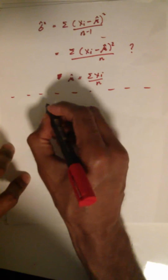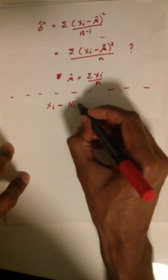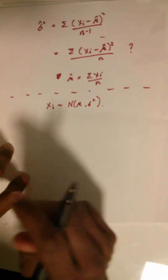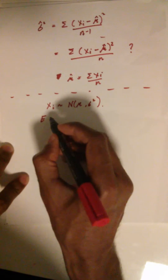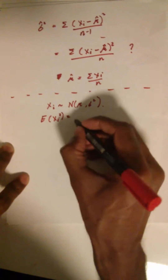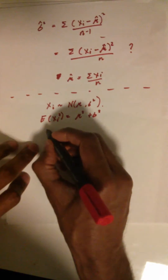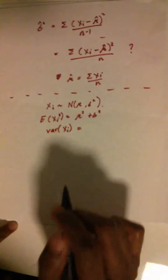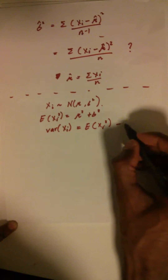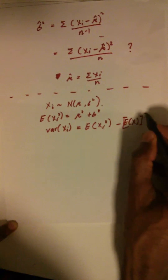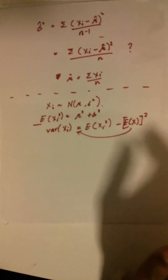Before we get started we need to set some ground rules. I'm going to assume that the x's are normally distributed with mean μ and variance σ². Also, the expectation of xi² equals μ² plus σ². This comes from rearranging the variance formula: Var(xi) = E[xi²] − μ², so E[xi²] = μ² + σ².